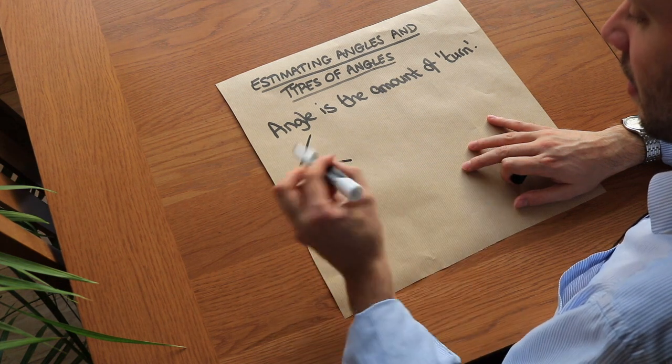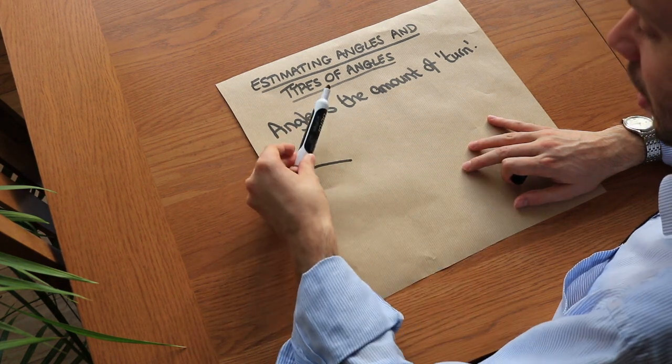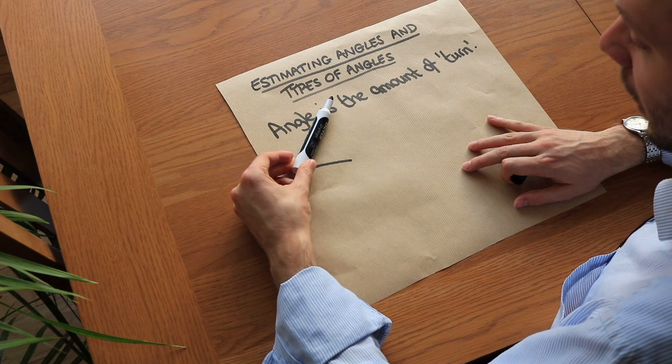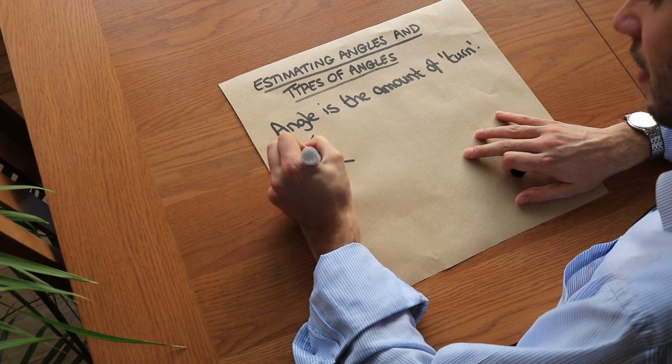So if we have two lines like this, we're interested in the angle around that point - the amount of turn such that you're initially facing this way and then you turn to face this way. We'd usually draw it like this: the angle.